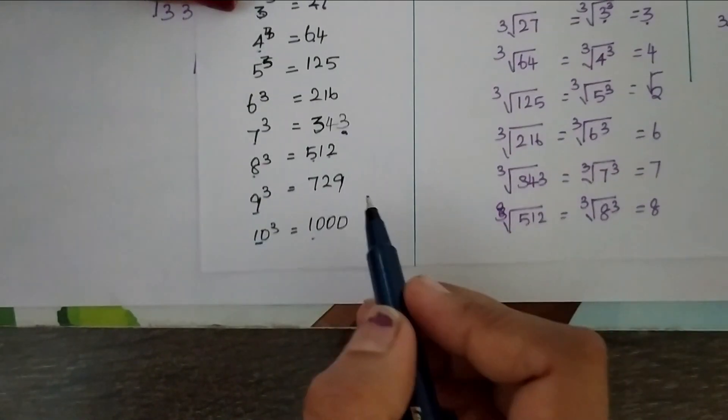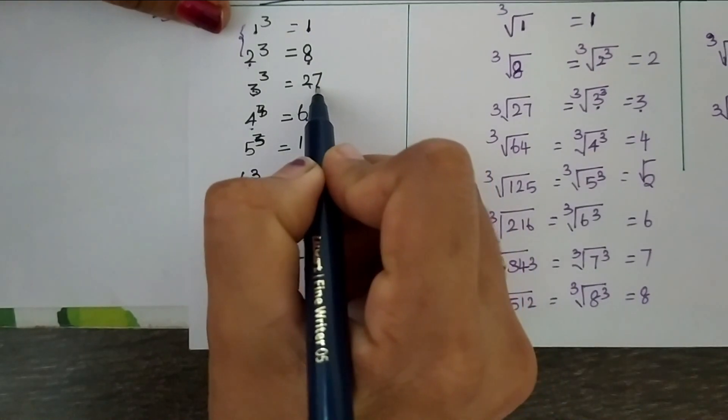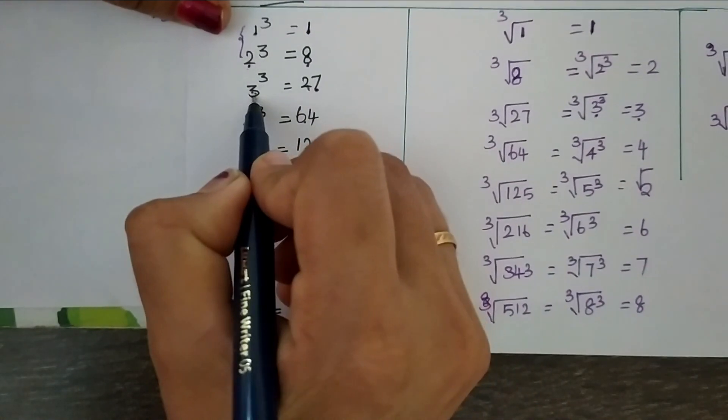Check for the number which is having 7 in its unit's place. Here we have 7 in its unit's place. Corresponding number is 3. So, it is 3.